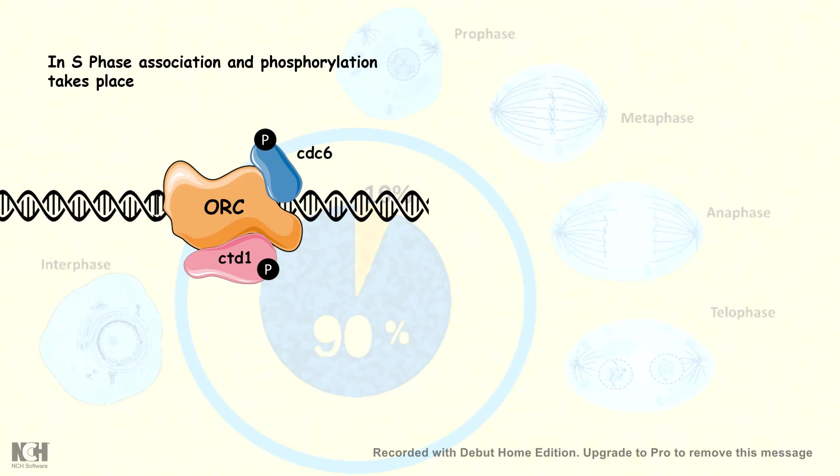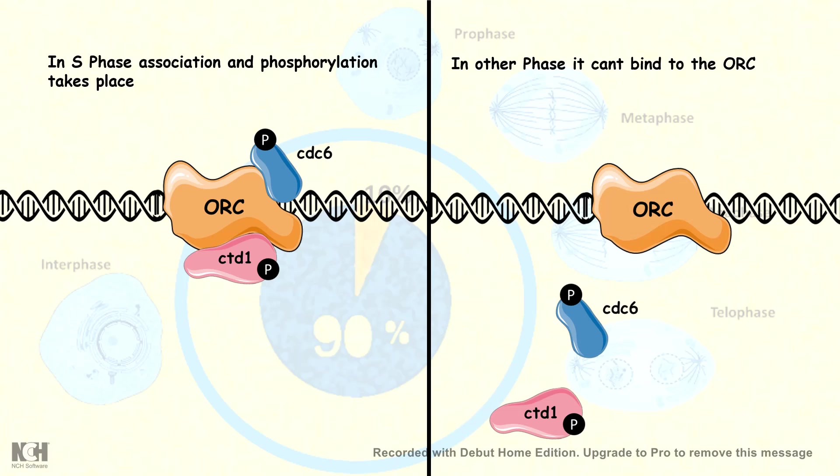The main part that we have discussed in this video is that in the S phase, the association and phosphorylation takes place. But in other phases, they cannot associate because they are already in a phosphorylated state. They need to be first dephosphorylated and then rephosphorylated in order to start another round of replication. But the situation which is created by these cyclins does not allow to do so. That is why the replication is restricted to the S phase.